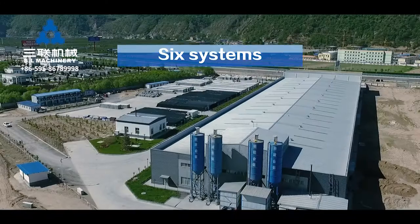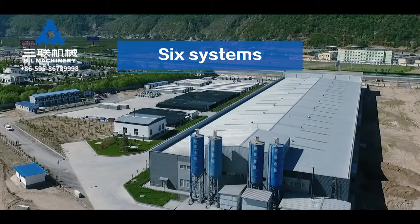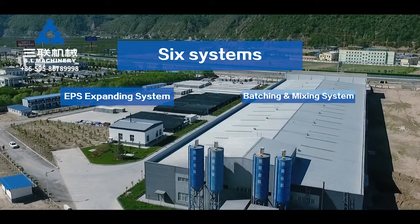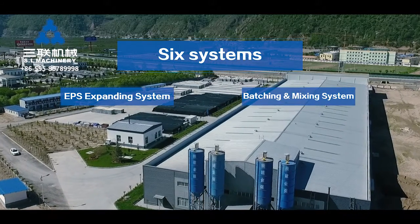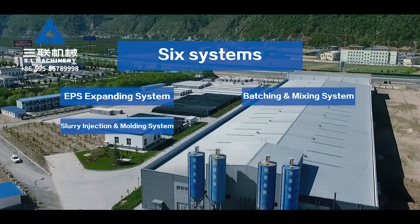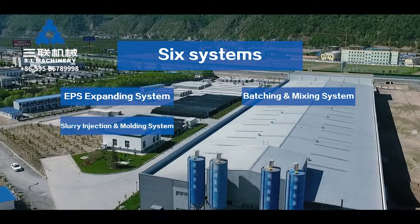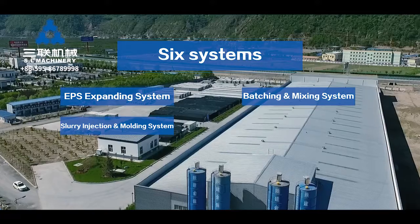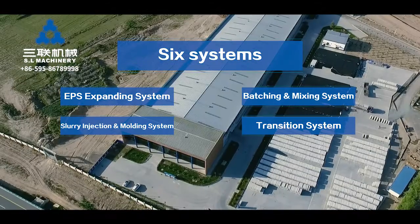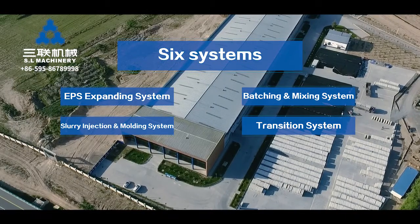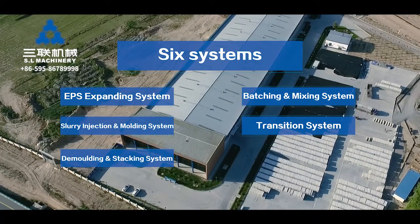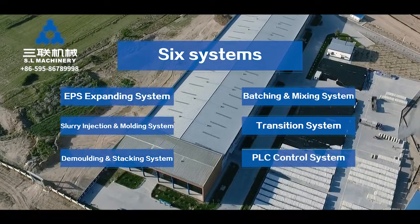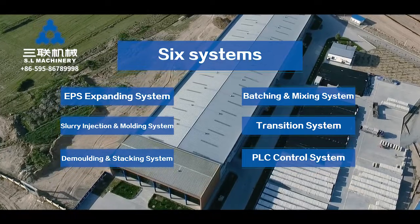The production line consists of six systems: the EPS expanding system, the batching and mixing system, the slurry injection and molding system, the transition system, the demolding and stacking system, and the PLC control system.